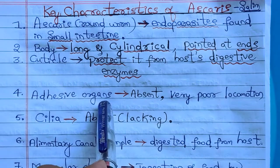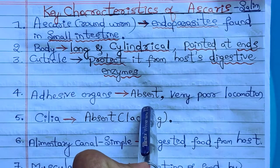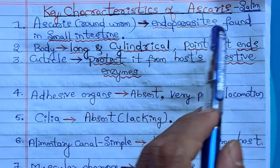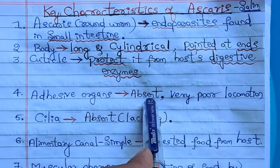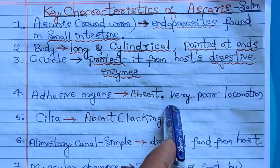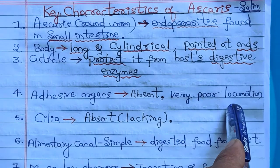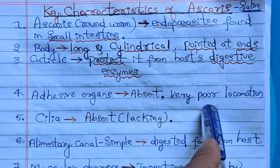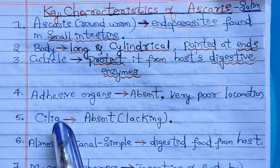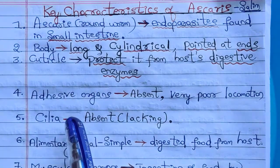The adhesive organs are entirely absent in Ascaris. In platyhelminthes, suckers and hooks serve as adhesive organs, but these are absent in Ascaris. Due to this absence, it is compensated by very poor locomotion. Cilia, which are hair-like structures, are also lacking in Ascaris.